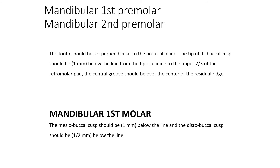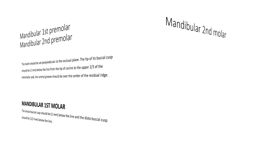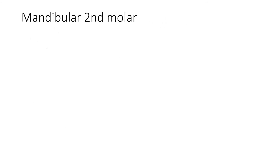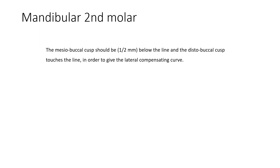The mandibular first molar: the mesiobuccal cusp should be 1 mm below the distobuccal cusp and 0.5 mm below the canine line — so the molar is 1.5 mm below the line. For the mandibular second molar, the mesiobuccal cusp should be half a millimeter below the distobuccal cusp.